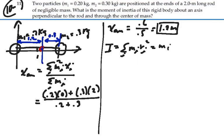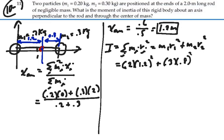This would be mass 1, R1 squared, plus mass 2, R2 squared. So this would be 0.2 times 1.2 squared, plus 0.3 times 0.8 squared,